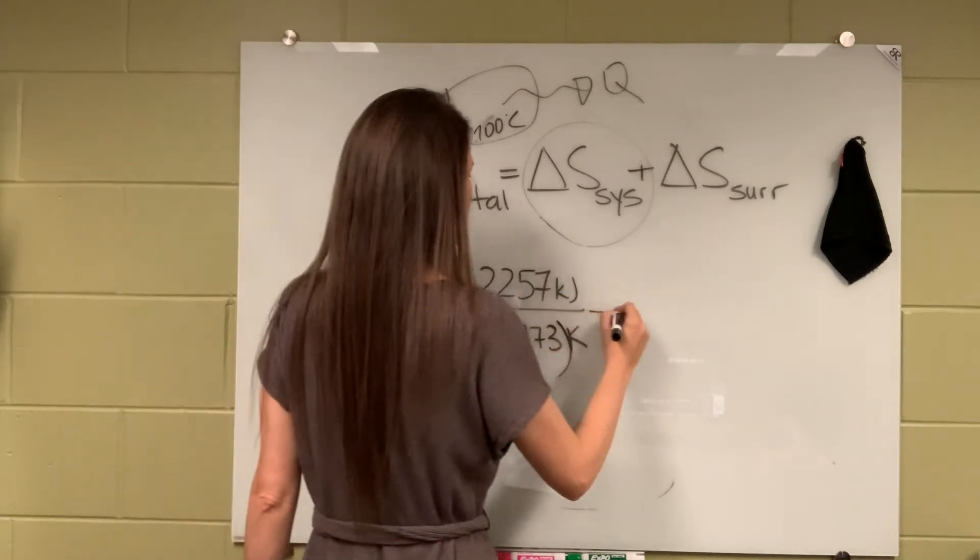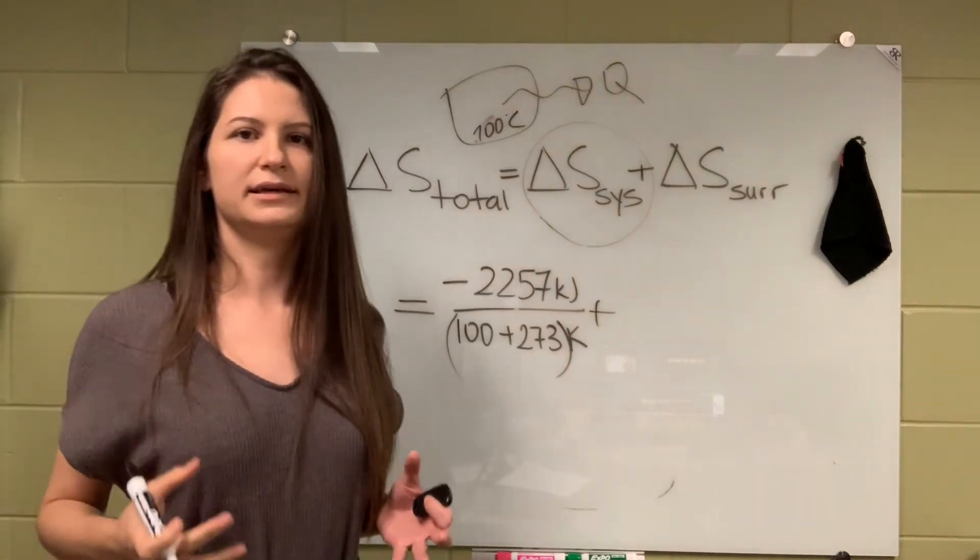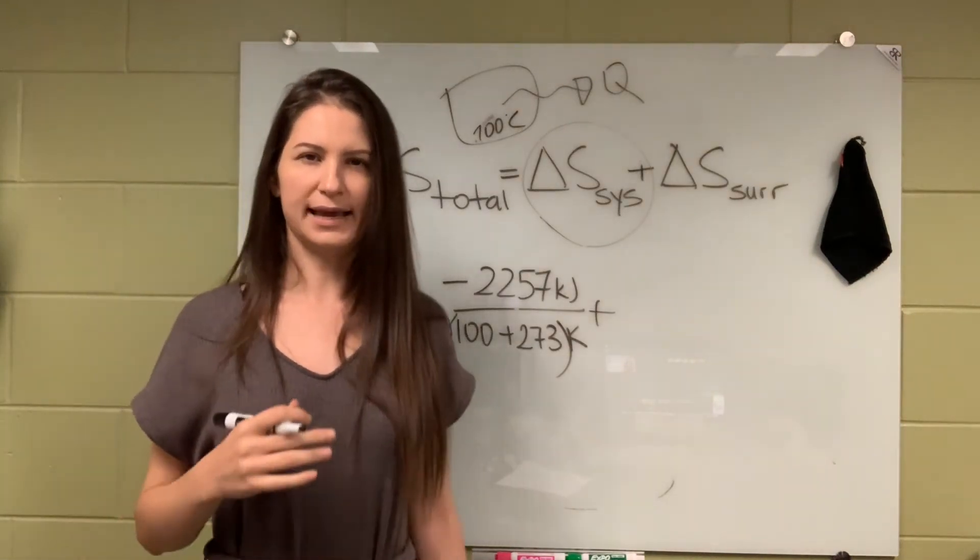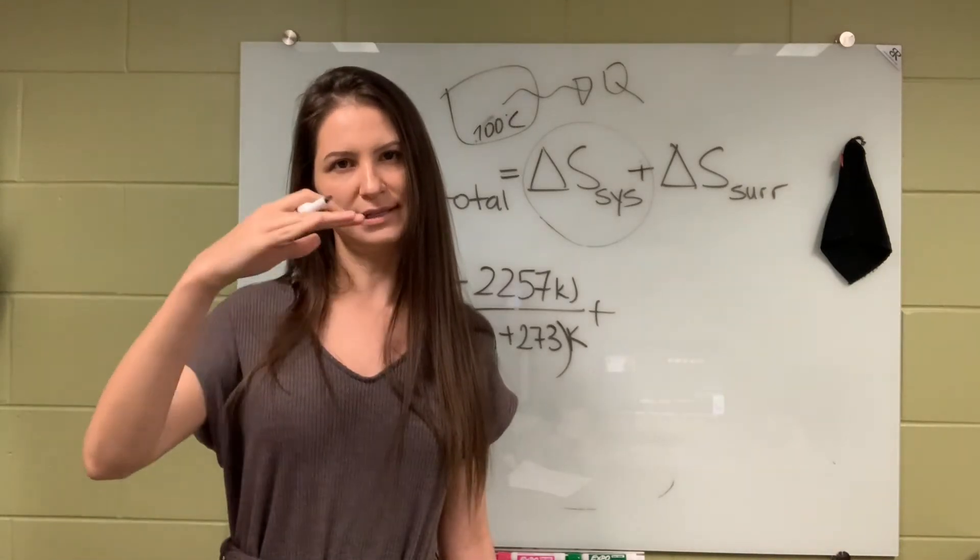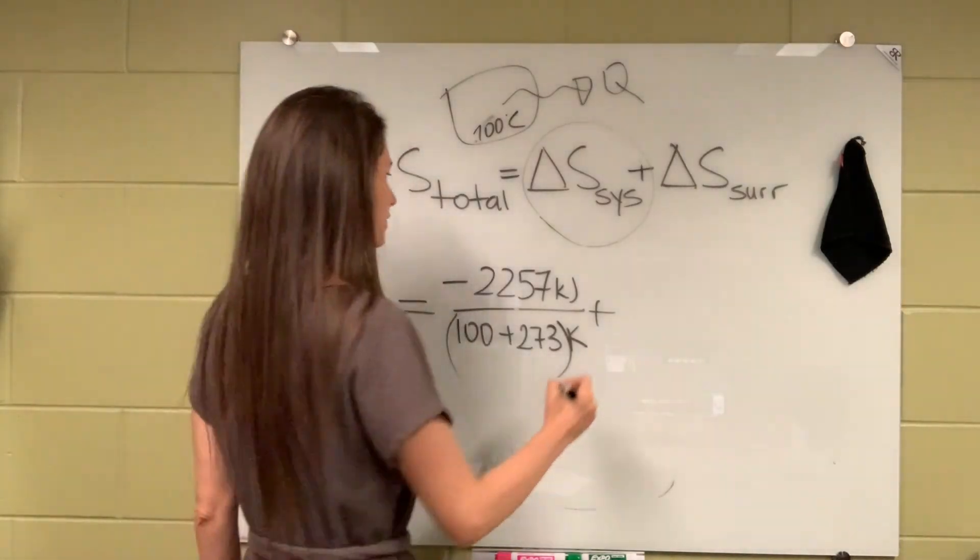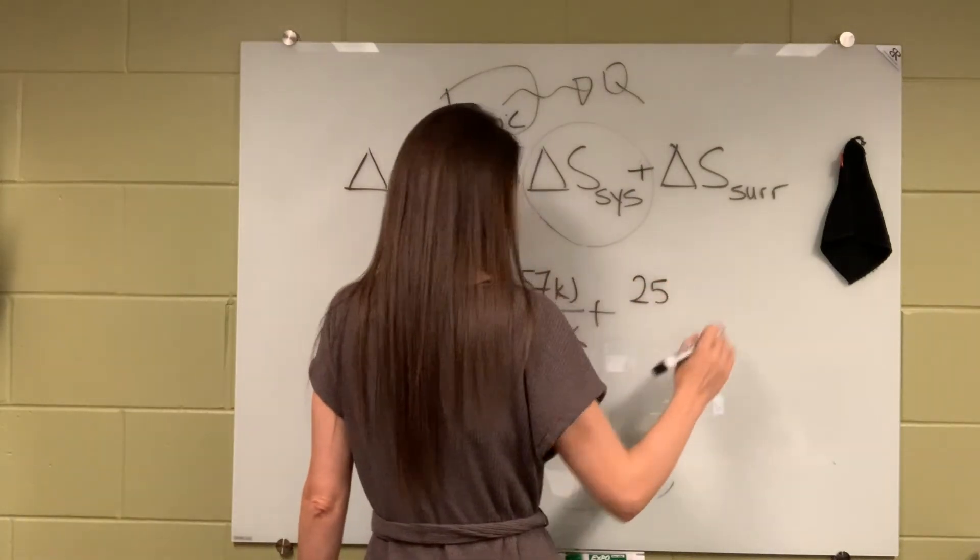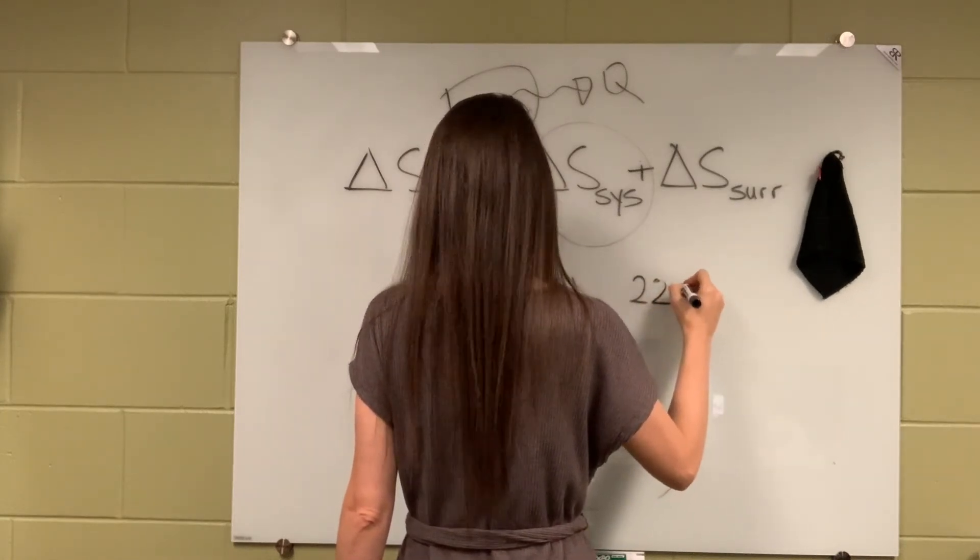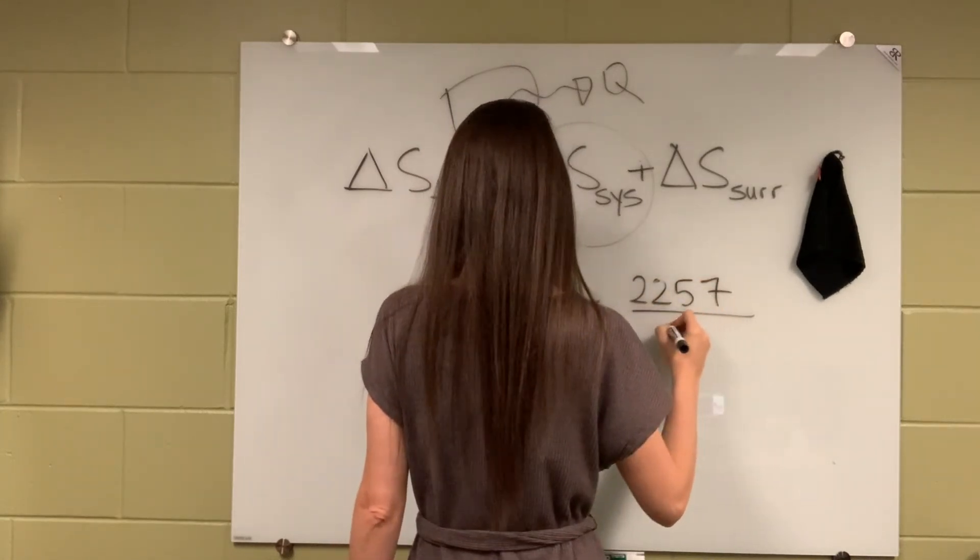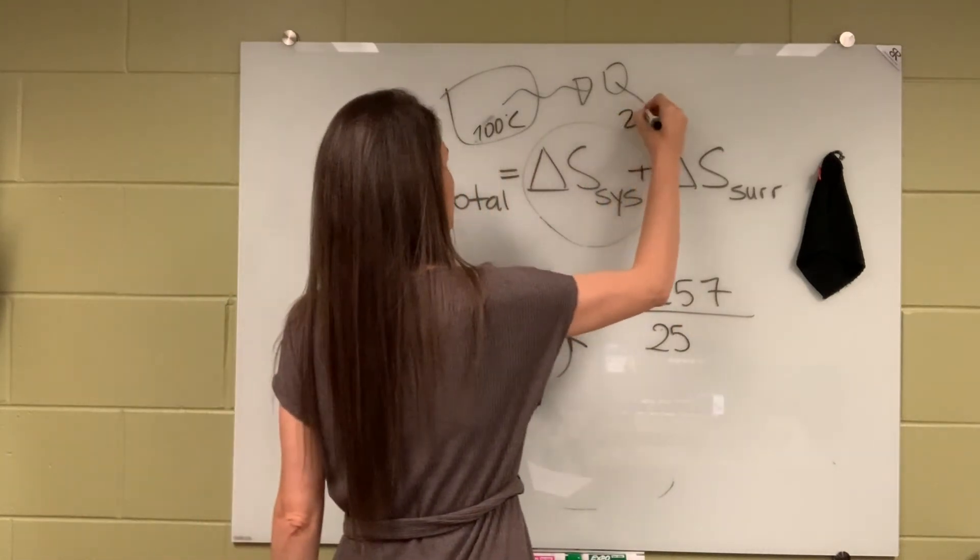Now we continue. The surrounding is gonna gain heat, so you expect its entropy to be positive, entropy change, because its entropy is increasing. So therefore you will use a positive term here. But the environment temperature is 25 degrees C, so 25 plus 273 kelvin.